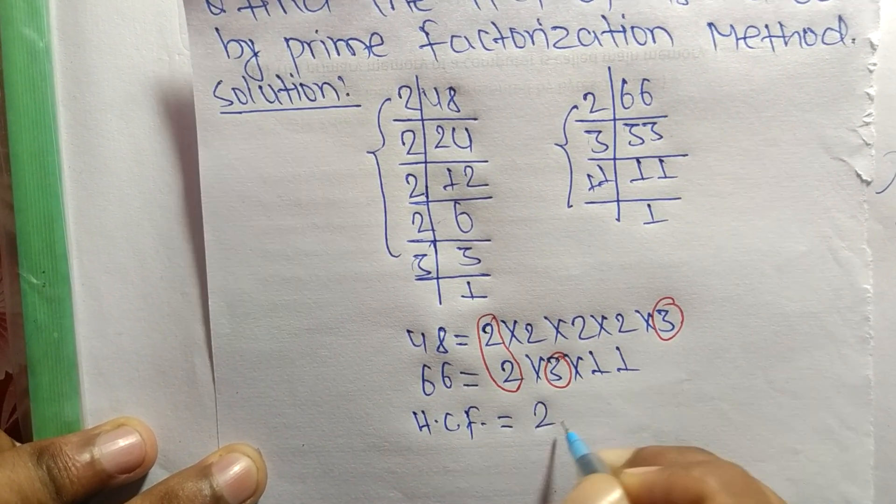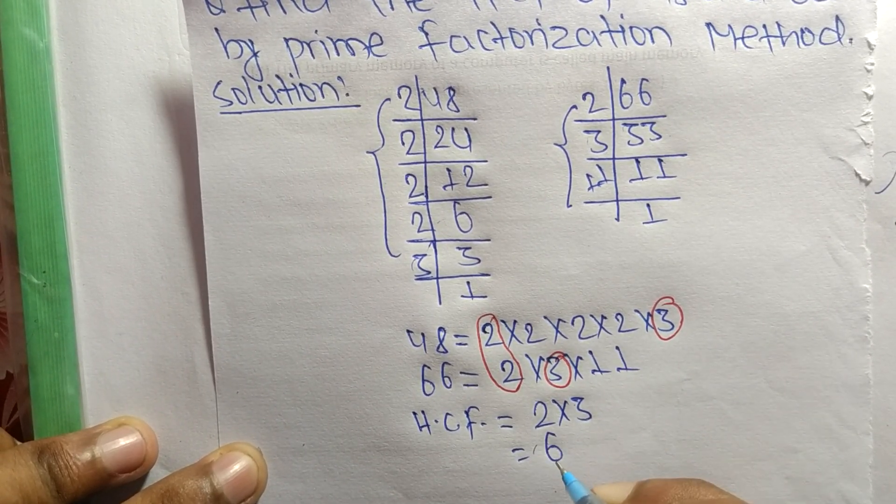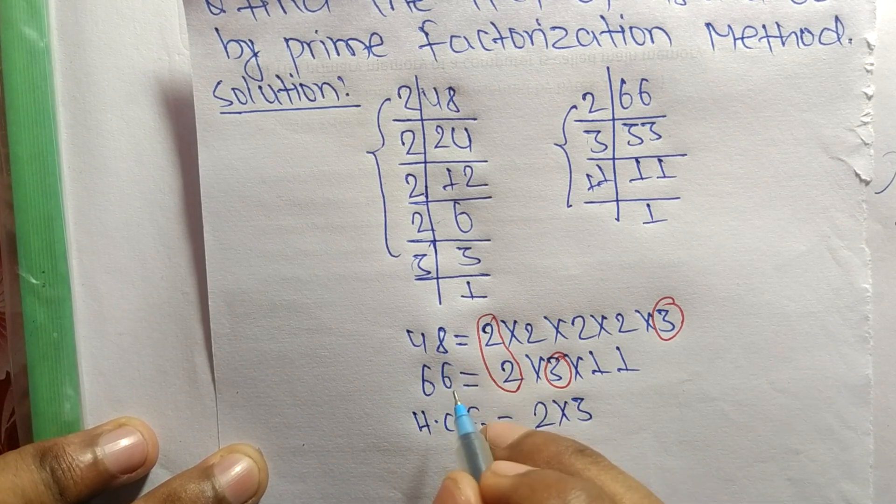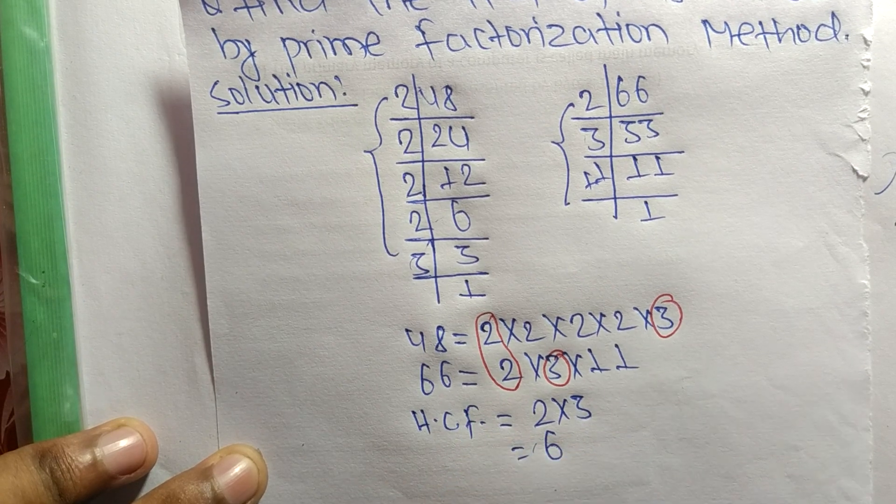So 2 times 3 means it is 6. So 6 is the HCF of 48 and 66. So this much for today and thanks for watching.